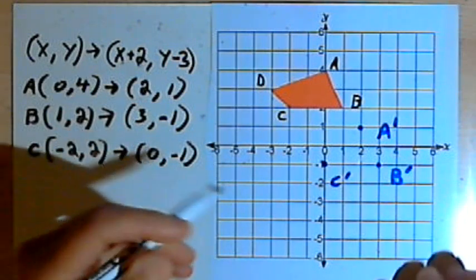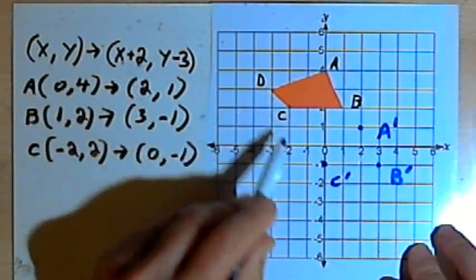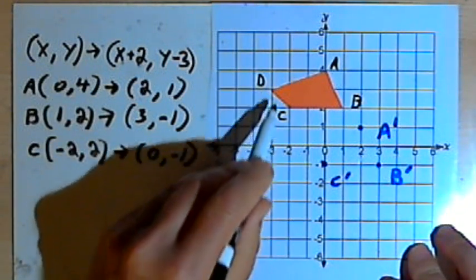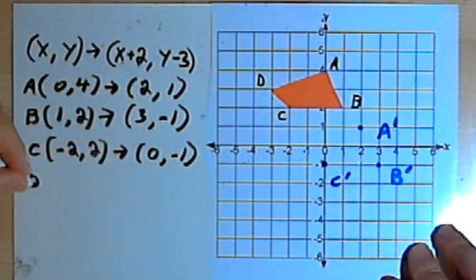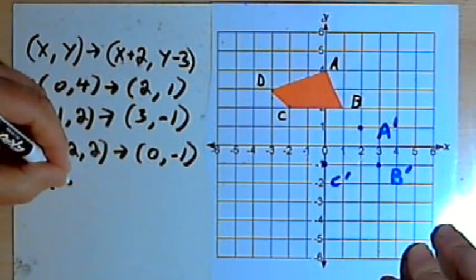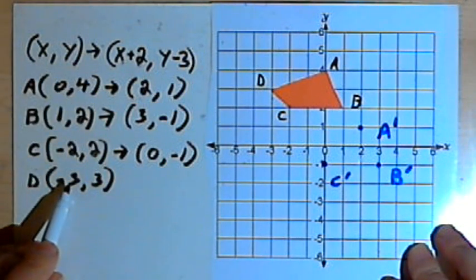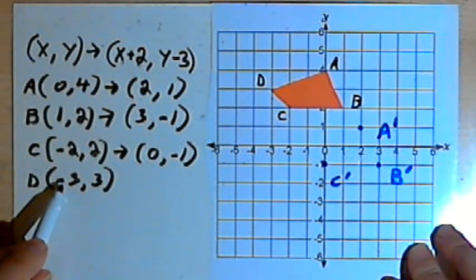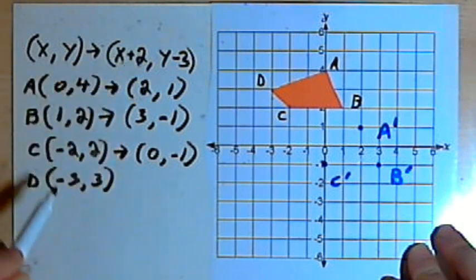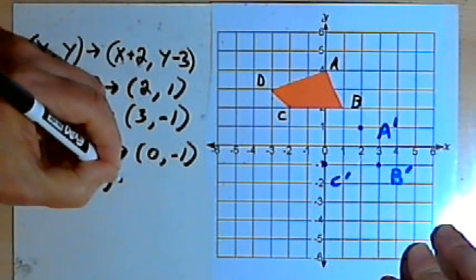And now we've just got to do D. Point D. Point D is located at (-3, 3). So I want to take that negative 3, the x-coordinate, and add 2 more to it. Negative 3 plus 2 is negative 1.